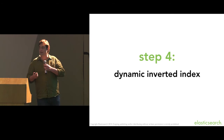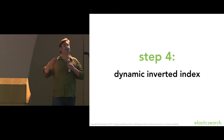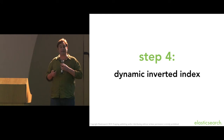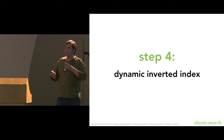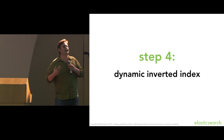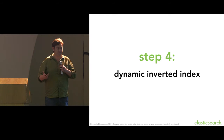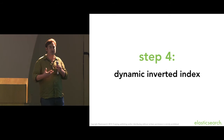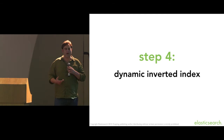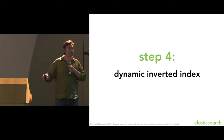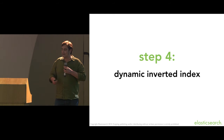So we have to deal with how to turn this inverted index into a dynamic inverted index — something we can update. And the way this happens is in Lucene. Lucene is a set of Java libraries used to build search engines. Elasticsearch is based on Lucene — we use Lucene internally. It is some very smart code. What we're talking about here is all in Lucene; later on we add stuff from Elasticsearch.